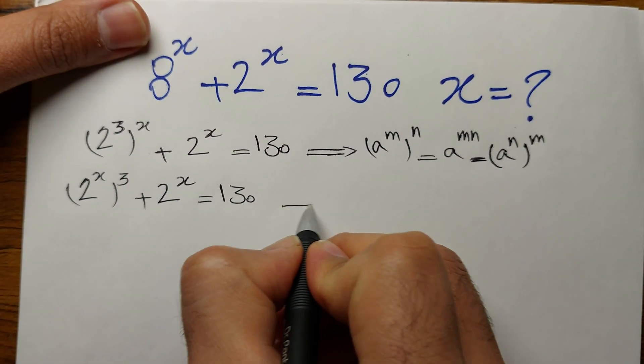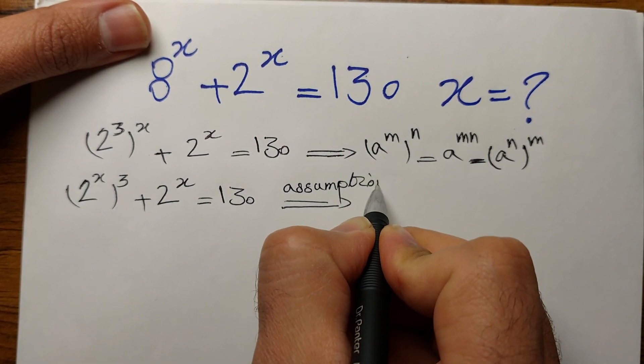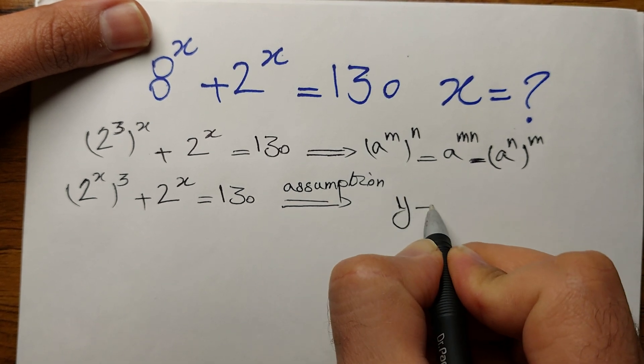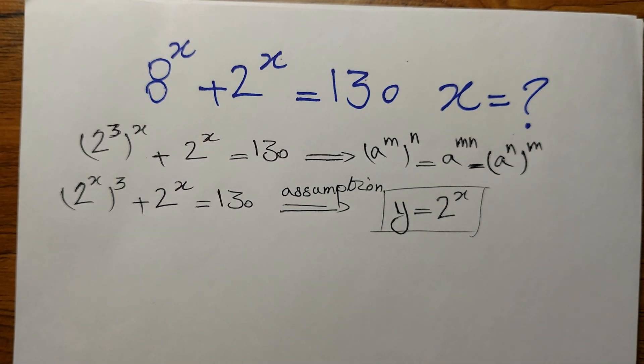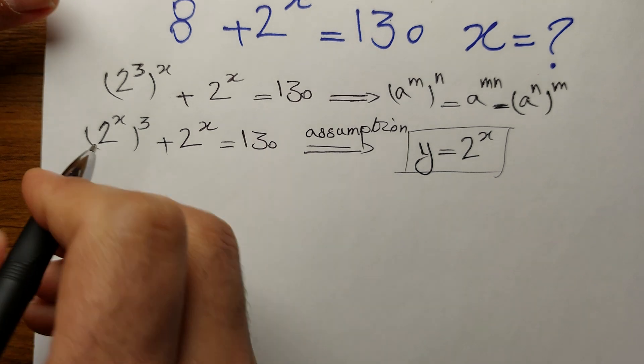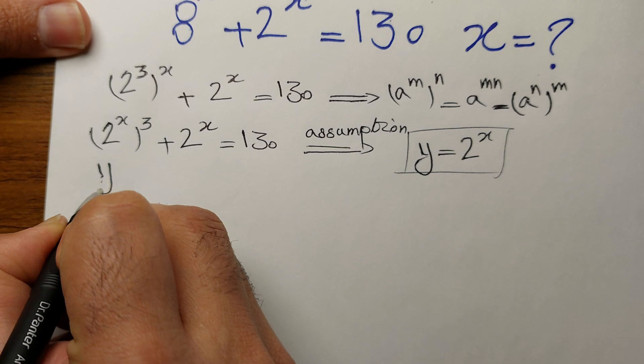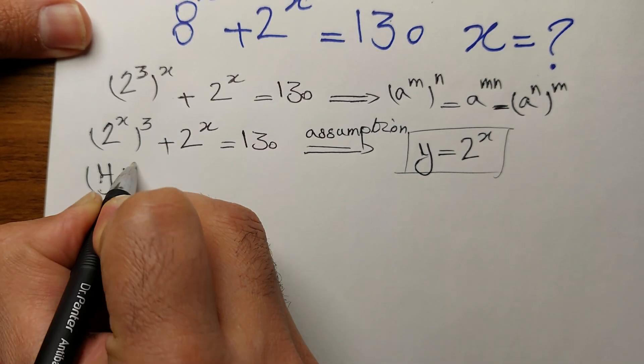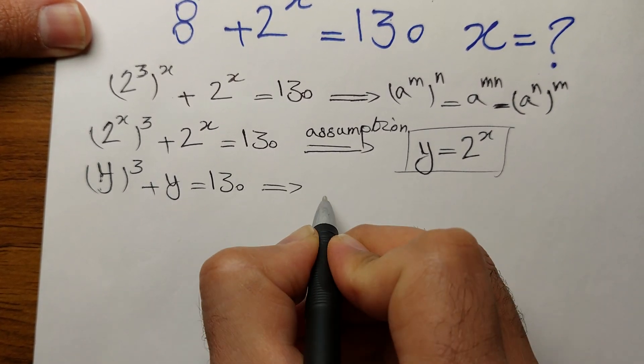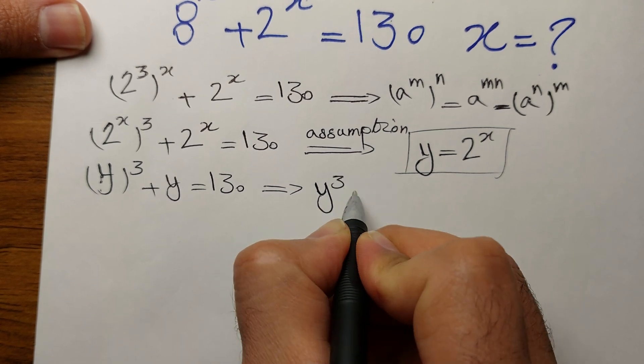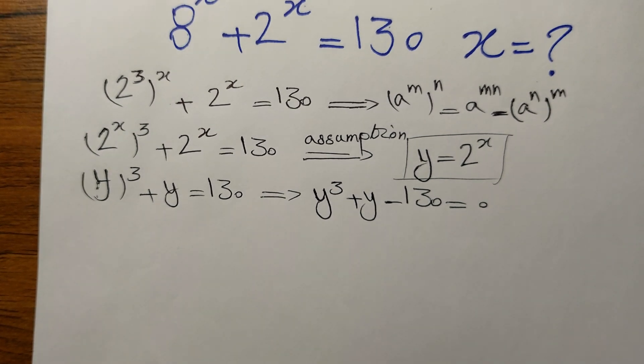Okay, now what? Let's have an assumption. Let's assume that y equals 2 to the power of x because it makes it way easier for us to solve for y and at the end solve for x later. So let's rewrite it: y cubed plus y equals 130. Let's take 130 to the other side: y cubed plus y minus 130 equals 0.